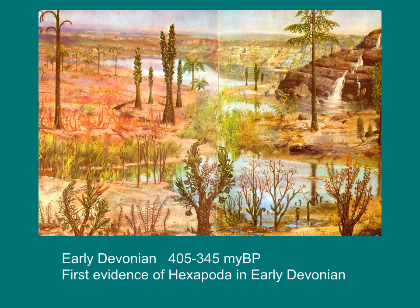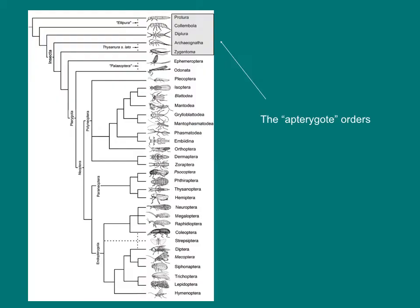The first insects belonged to what we now call the apterygote orders — small, wingless, mostly soil-dwelling insects. You may not be very familiar with these insects, but they are all around us, especially in soil, leaf litter, and mosses.